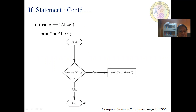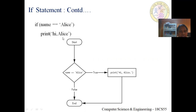The flowchart of the if statement looks like this. Here is a sample code: if name is equal to Alice, then print 'hi Alice'. Starting from the top, the diamond shape represents the condition. If the condition is true it will print 'hi Alice'; otherwise the program ends.